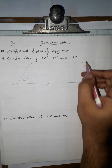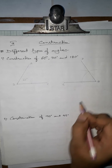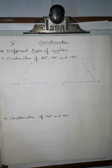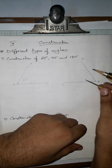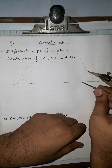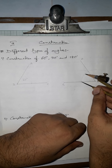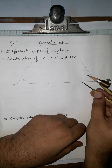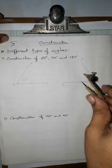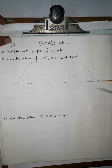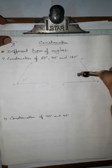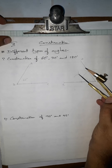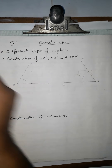Now we bisect this 60-degree angle to get 30 degrees. From each of the two arc intersection points, we draw arcs of more than half the distance between them. From the first intersection point we draw an arc, then from the 60-degree intersection point we draw another arc crossing the first. We get a new intersection point.